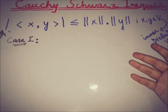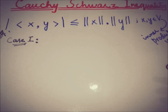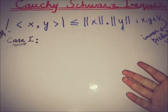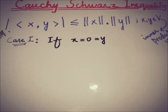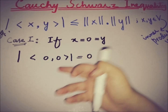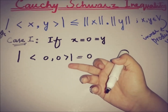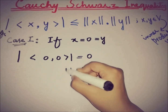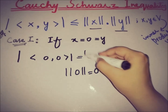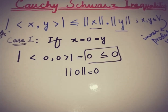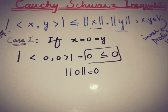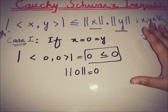The very first case when proving this inequality is when the two elements from the inner product space are zero vectors. If x and y are both zero vectors, then the inner product of zero with zero equals zero, the magnitude of zero is zero, and the norm of zero is also zero. So zero times zero gives zero, and the inequality holds trivially.